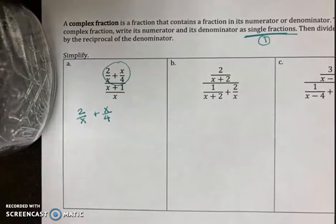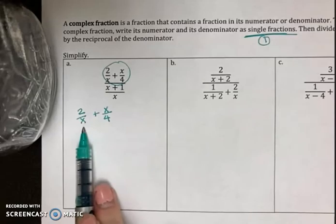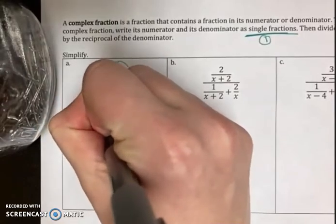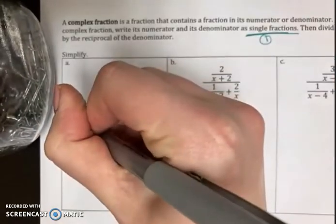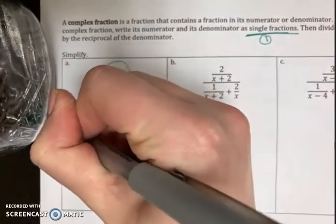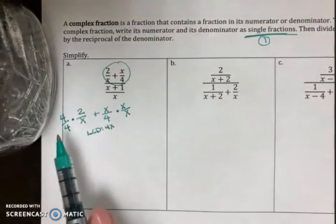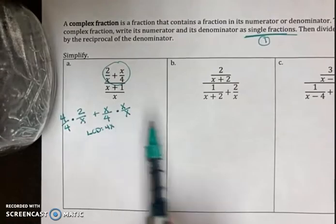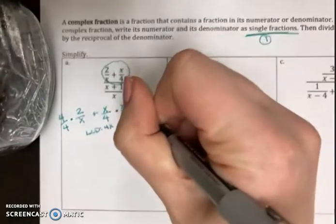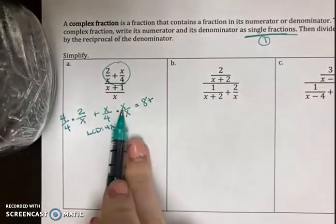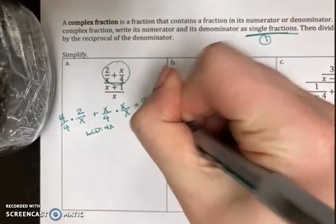If I'm adding, remember, I need to find a least common denominator. My least common denominator here is going to be 4x. So I'm going to have to multiply the 2 over x by 4 over 4 and the x over 4 by x over x. See how that makes it so I can have the common denominator of 4x. So that gives me 4 times 2 is 8 plus x times x is x squared, all over 4x.